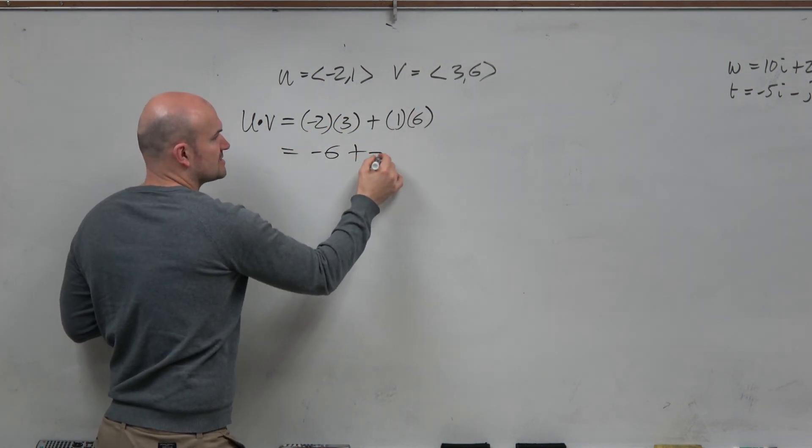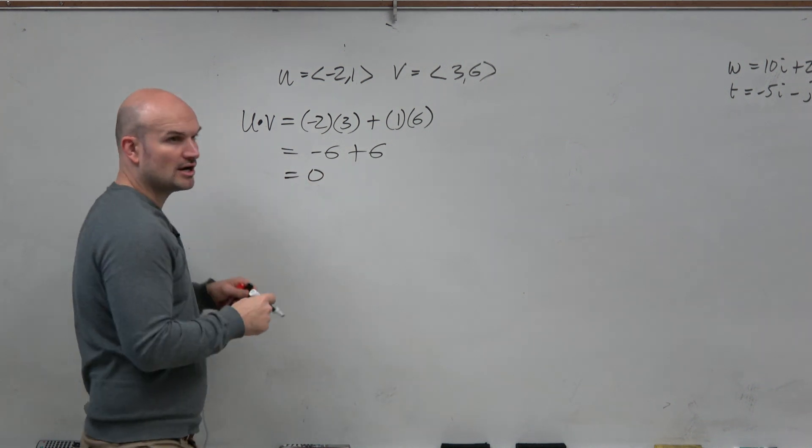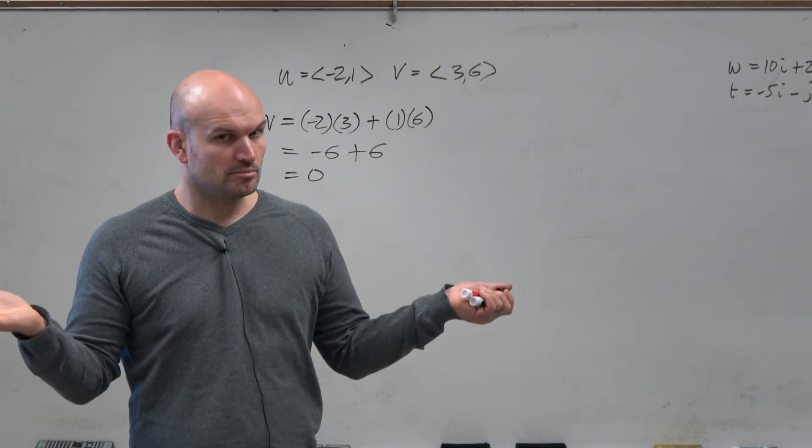So therefore, I get negative 6 plus 6, which equals 0. They're orthogonal. Voila.